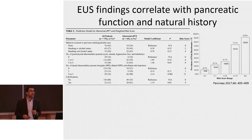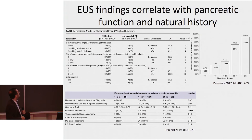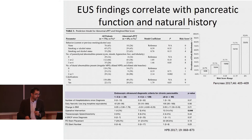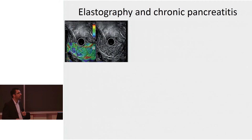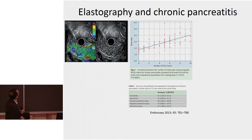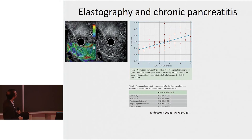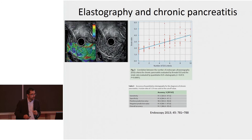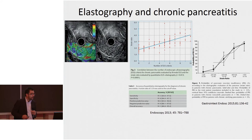In another observational study, the higher the number of EUS findings compatible with pancreatitis, the higher the risk for the patient to eventually need surgery for chronic pancreatitis. Regarding elastography, the strain ratio — a measure of pancreatic hardness — is related to the number of EUS criteria and appears to have good operating characteristics. For reasons of subjectivity and feasibility, this has not entered diagnostic algorithms, but it does correlate with the probability of pancreatic exocrine insufficiency. The higher the strain ratio, the higher the risk for pancreatic insufficiency.